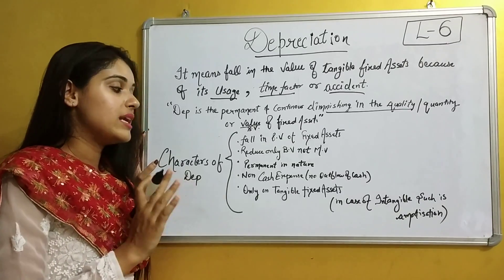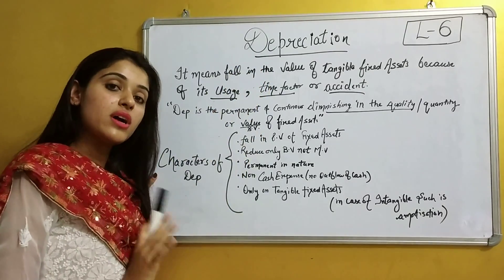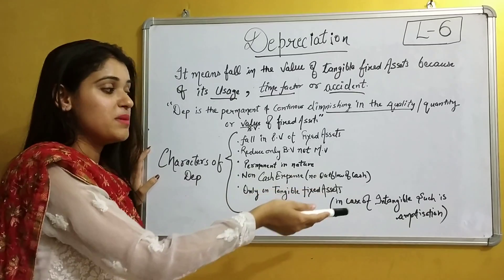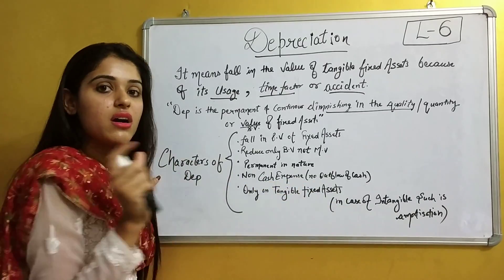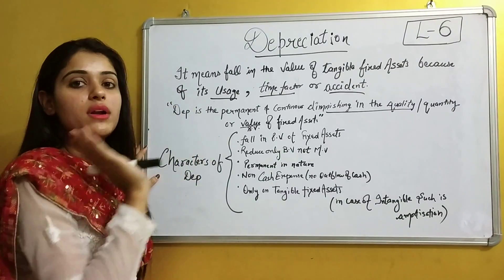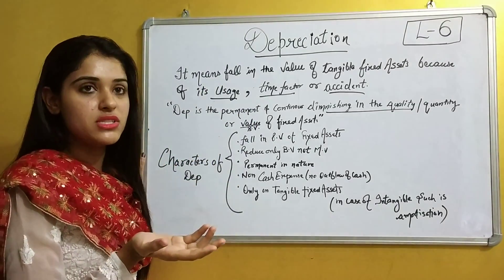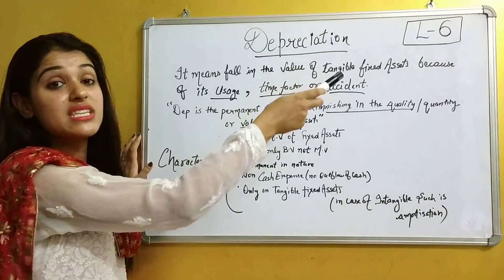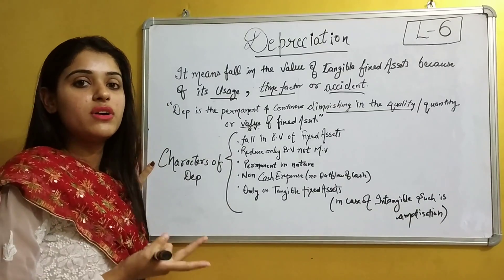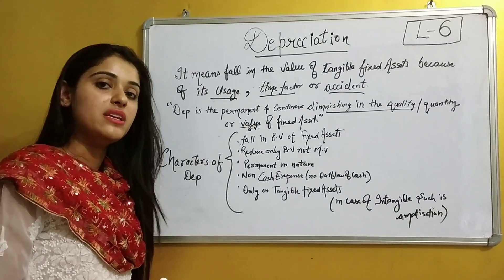Next, depreciation applies only to tangible fixed assets. If we decrease the value of intangible assets, the term used is amortization, not depreciation. In this video, we have covered the theoretical portion of depreciation. In our next video, lecture number 7, we will do the numerical portion of depreciation and discuss two different methods: the straight line method and the diminishing balance method.